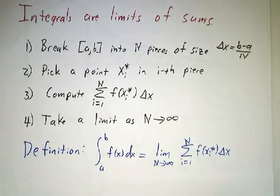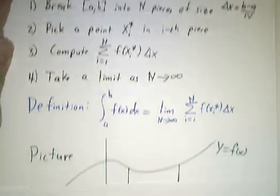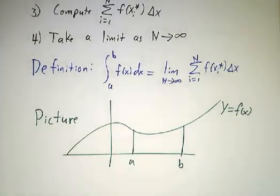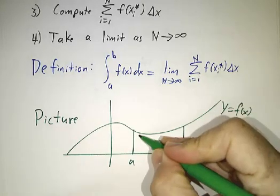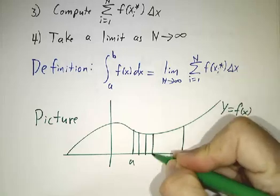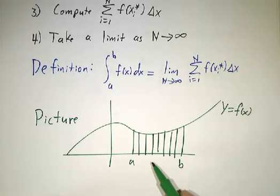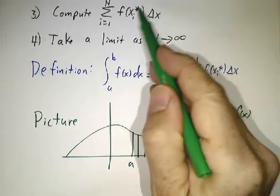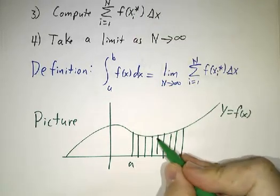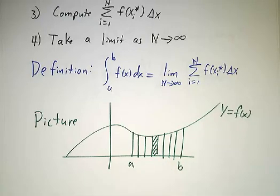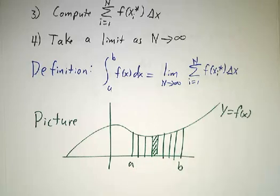That's a definition, but it's good to visualize it with a picture. The standard example is the area under a curve. We have a picture of chopping the interval from a to b into n pieces, and f gives the approximate area of one of these strips. You add them up to get the total area, take a limit, and it becomes exact.